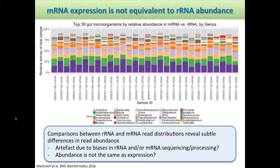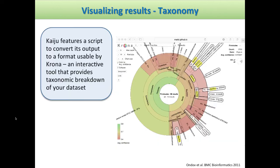So we've generated our messenger RNA, sequenced it, annotated it, assembled it, done some functional annotation, done some taxonomic annotations — and now how do we actually visualize these results? We could start looking at things like taxonomy within our dataset.